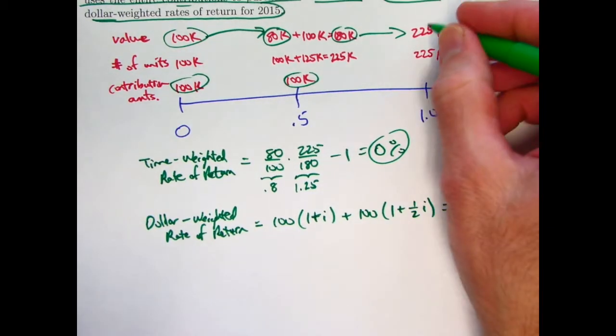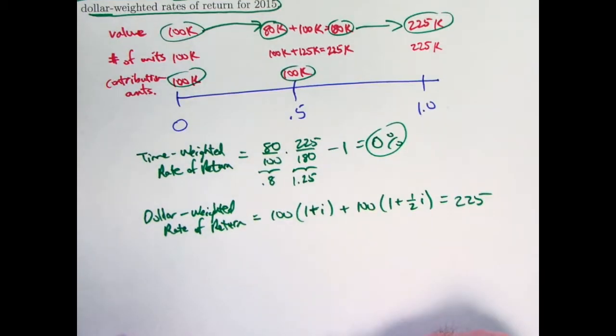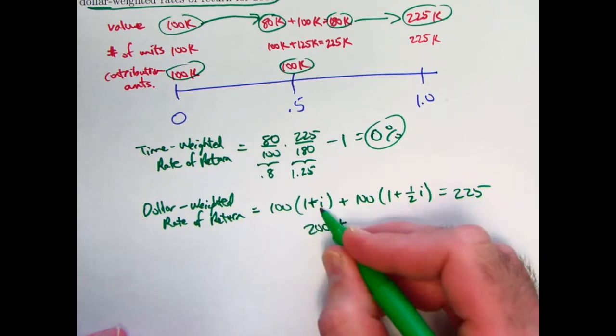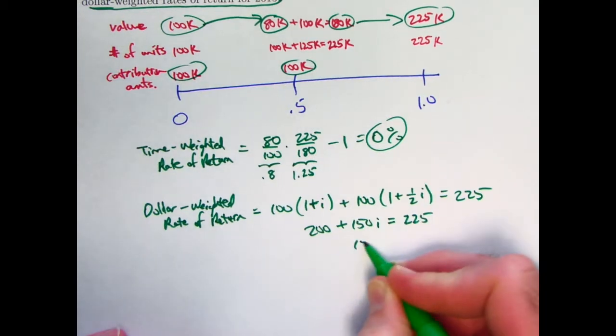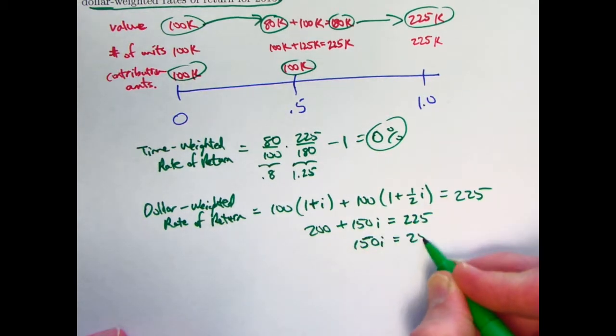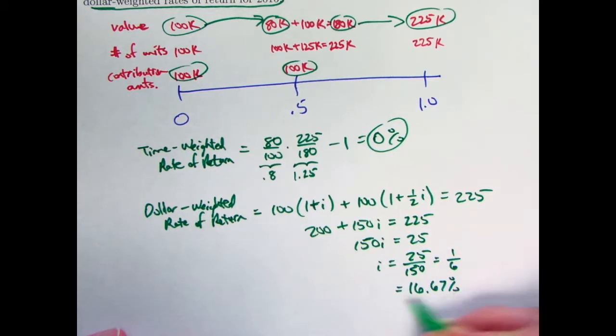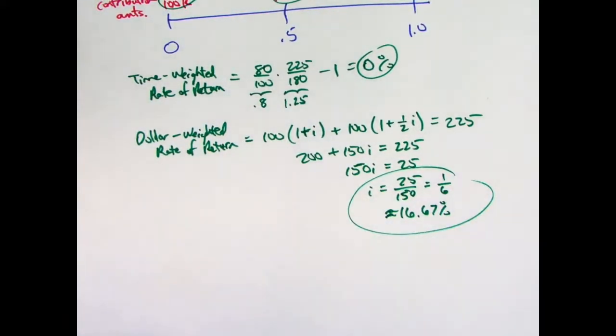And this has to equal the final value at the end, 225,000. These are in thousands. Now solve for i. 100 plus 100 is 200. 100i plus 50i is 150i. Subtract 200 from both sides. 150i will equal 25, so i will be 25 over 150, which is one-sixth, which as a percent is about 16.67 percent. So there is the dollar-weighted or money-weighted rate of return.